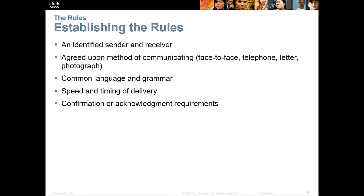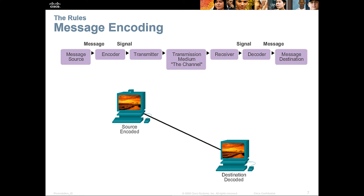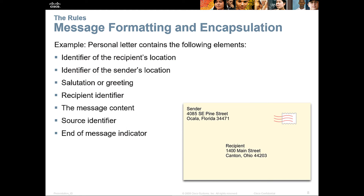How we do that is: we have a source, which is encoded, and then transmitted over a medium. The receiver will receive it, decode it, and it is delivered to the actual message destination. If we look at formatting of a letter, all of this is predefined by a set standard — things like source, destination, where the stamp is — all specifically crafted. This is called message formatting.